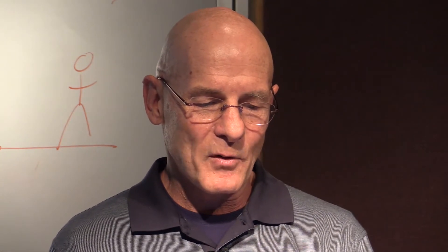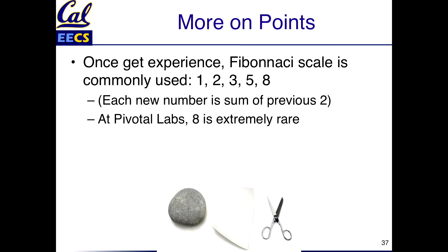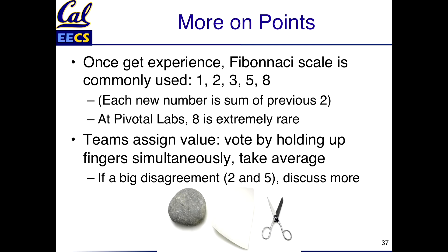How do you actually assign the points? Typically we start off with one, two, three — that's a good place to start. After you've been at it a while, you might use five and even eight. Pivotal Labs uses the Fibonacci scale, and even there, eight is extremely rare. When you get together in your daily scrum, you talk about the user story and everybody holds up fingers — one, two, three — and then you average them.